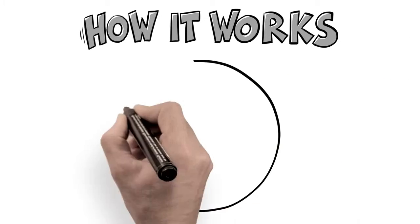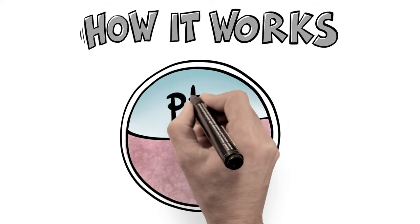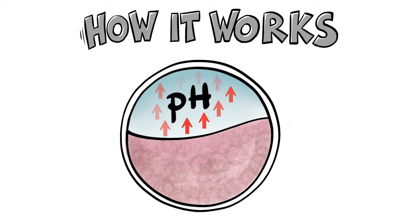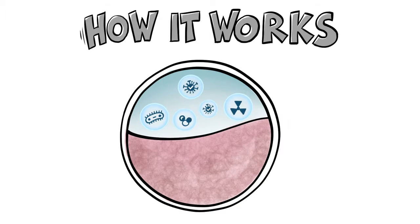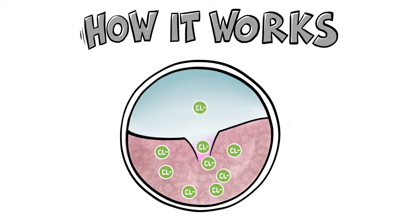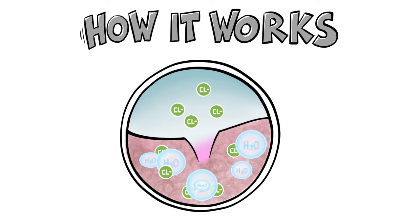When a calf is fed milk, the pH of the stomach increases, which can allow viruses and bacteria to pass through the stomach and cause disease in the calf's intestines. This causes a salt imbalance, driving excess water to the intestines, resulting in diarrhea.